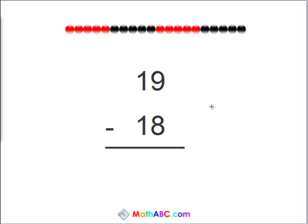Let's begin. 19 minus 18. Well, 18 comes right before 19, so if you subtract 18 from 19, it's just 1. 19 minus 18 is 1.